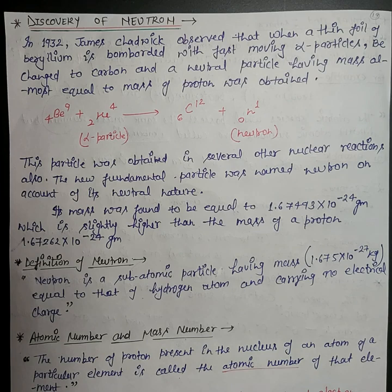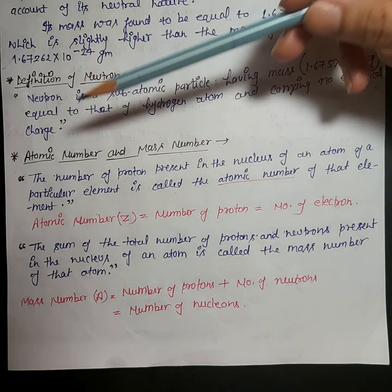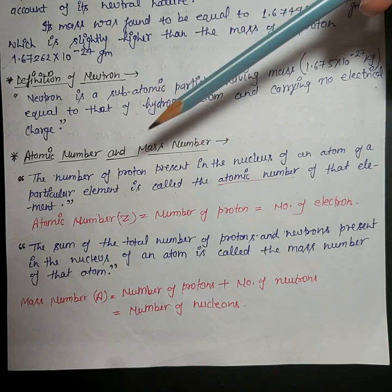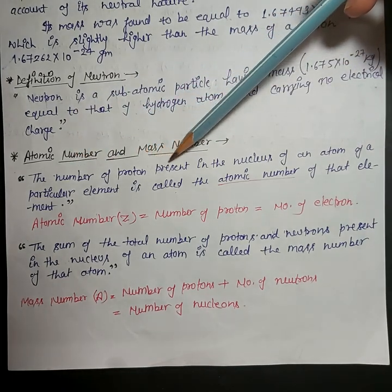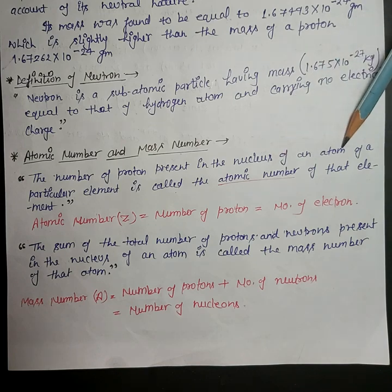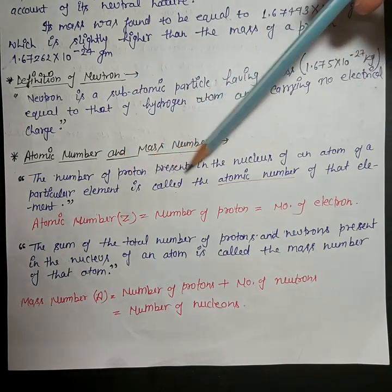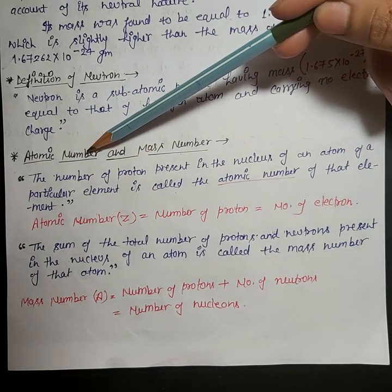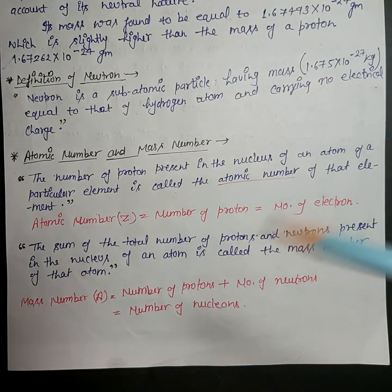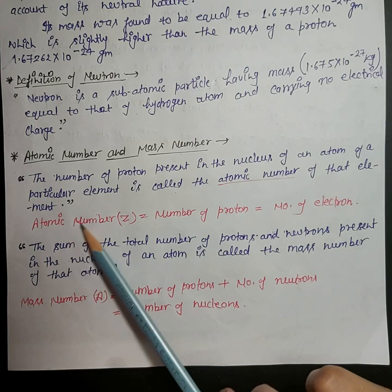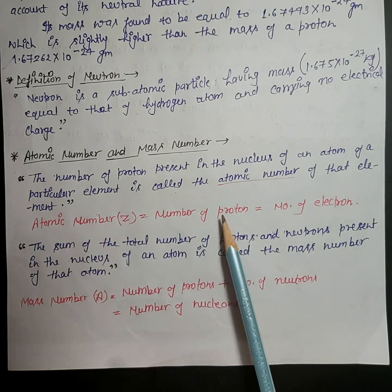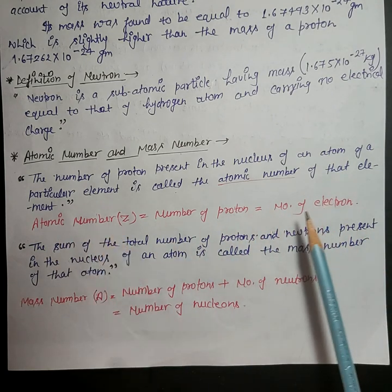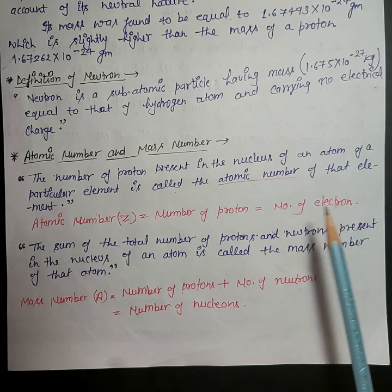Our next topic is atomic number and mass number. What is atomic number? The number of protons present in the nucleus of an atom of a particular element is called the atomic number of that element. Atomic number is represented by Z, so atomic number Z equals the number of protons. For a neutral atom, atomic number can also be equal to the number of electrons, because in a neutral atom the number of protons always equals the number of electrons.